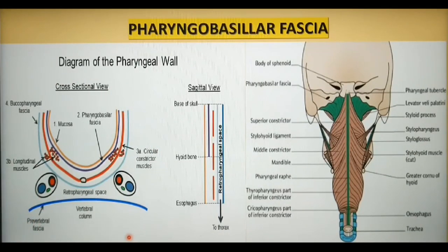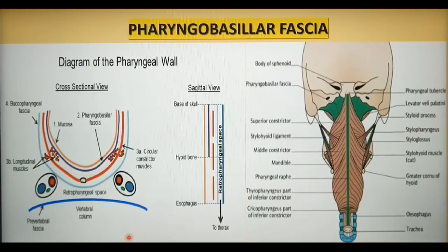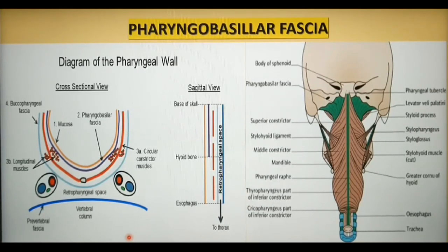That is all about the fascial layers of the neck in brief. In subsequent lectures, we shall discuss in detail the clinical significance of important facial spaces and how odontogenic infection spreads to each of them. Thank you.